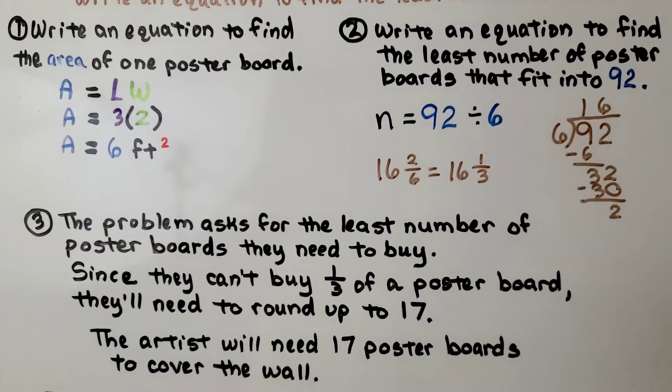Now the problem asks for the least number of poster boards they need to buy. We have 16 and 1/3. And since we can't buy 1/3 of a poster board, they'll need to round up to 17, so the artist will need 17 poster boards to cover the wall.